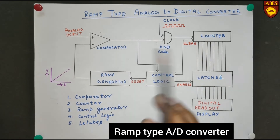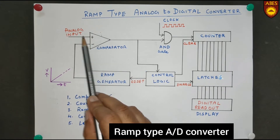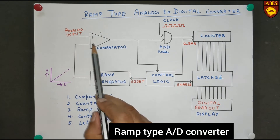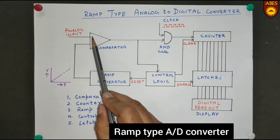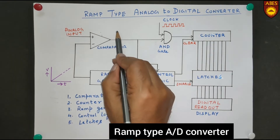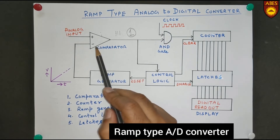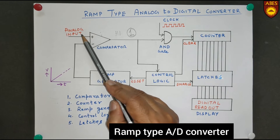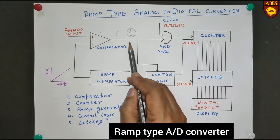The Comparator compares two waveforms: one is the analog signal coming from the source which is being converted, and the second is the signal coming from the Ramp Generator. As long as the positive terminal input is higher than the negative terminal input, it gives a high output — that means 1. When the negative terminal input becomes higher than the analog input, it gives a low output, 0.